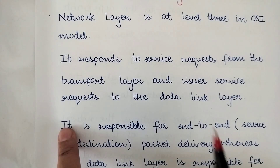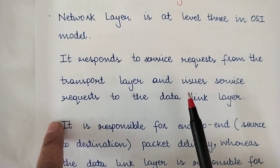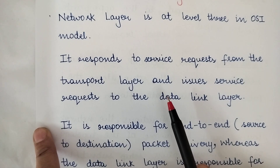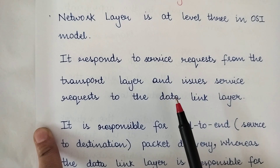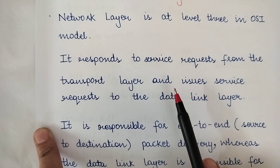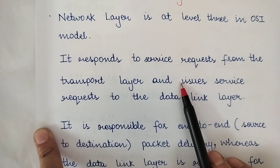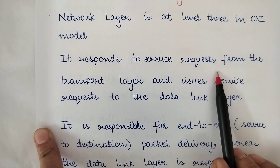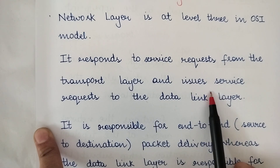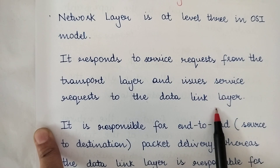The network layer responds to service requests from the transport layer. A layer responds to the service requests from the layer above it. So in the same manner, the network layer responds to the service request from the transport layer, which is the layer immediately above it. Then the network layer issues service requests to the data link layer.